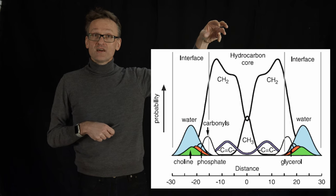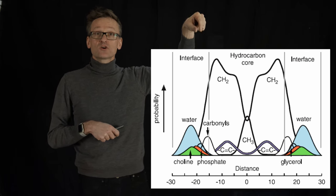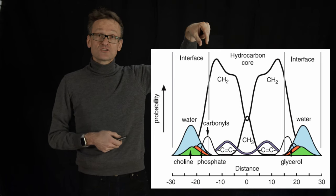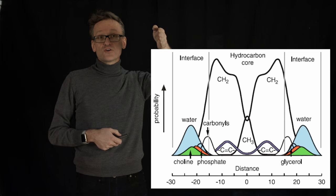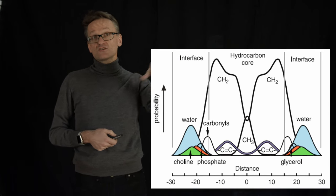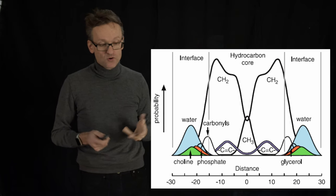As we're getting further to the head groups here, you start having some of these phosphates and choline groups, the carbonyl groups that's the top of those fatty acids, and then eventually out here you're starting to get the entire water phase. Some water molecules will be bound fairly strongly to these head groups and eventually of course you have the pure water.